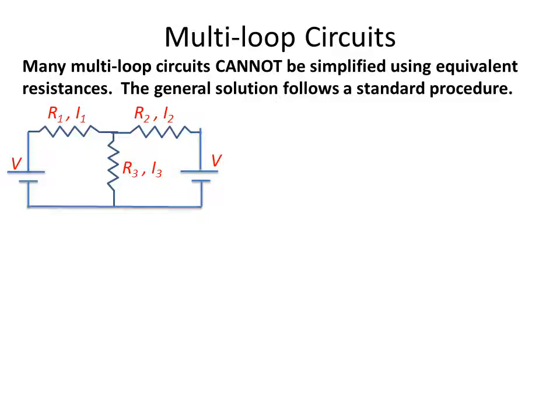For example, take a look at this two-loop circuit down to our lower left. The resistors in this circuit cannot be simplified into serial or parallel components.